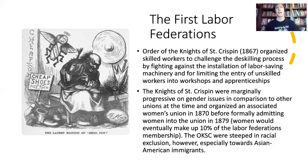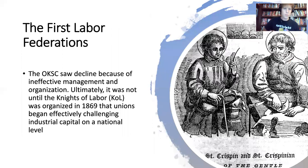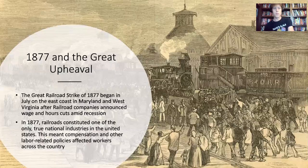These labor unions would say 'we need to stop immigration' rather than 'we need to stop abusive employment practices,' so the onus fell on immigrants. The Knights of St. Crispin eventually saw their decline because of ineffective management and organization — they were very slow to change and not very responsive to crises as they developed. Very similar to the National Labor Union, the Knights of St. Crispin gradually saw decline as more robust labor federations started to establish themselves.